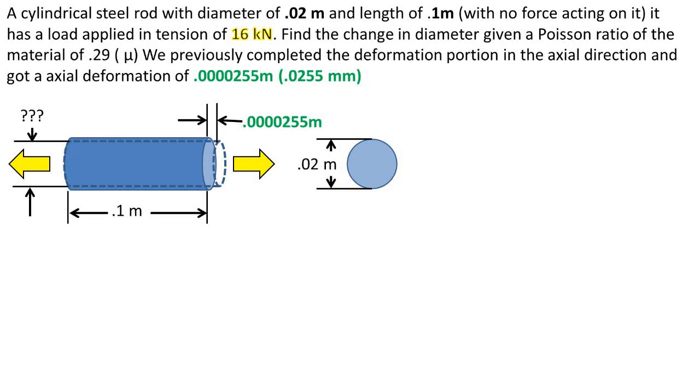In this problem, we have a cylindrical steel rod with a diameter of 0.02 meters and length of 0.1 meters. This is with no force acting on it. It has a load applied in tension of 16 kilonewtons.